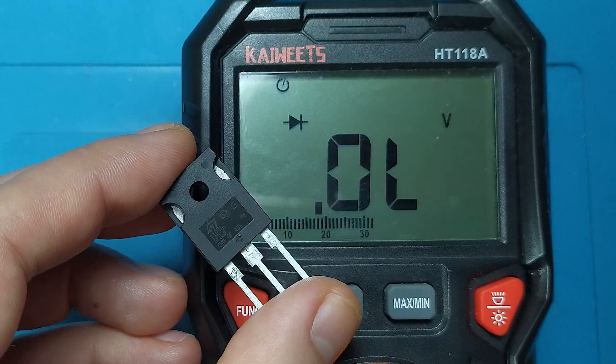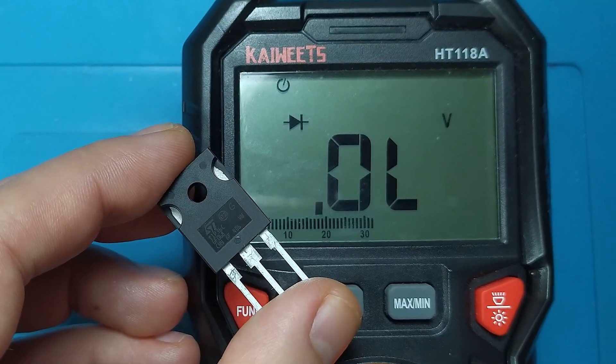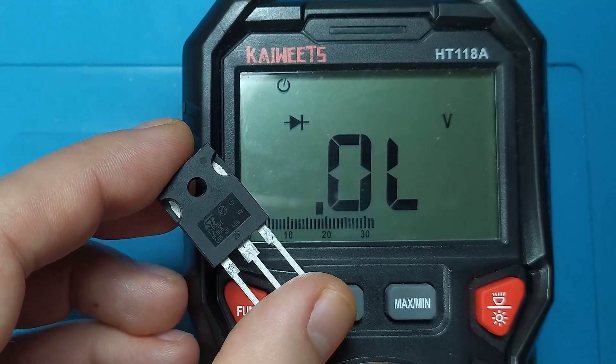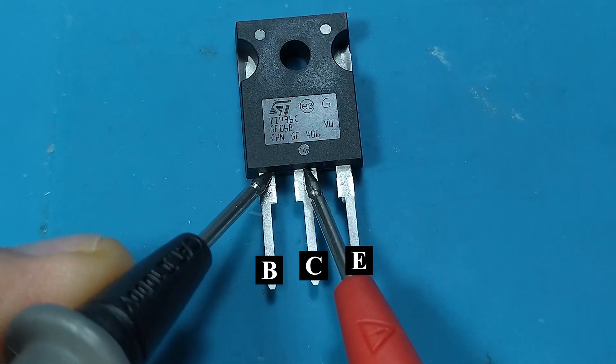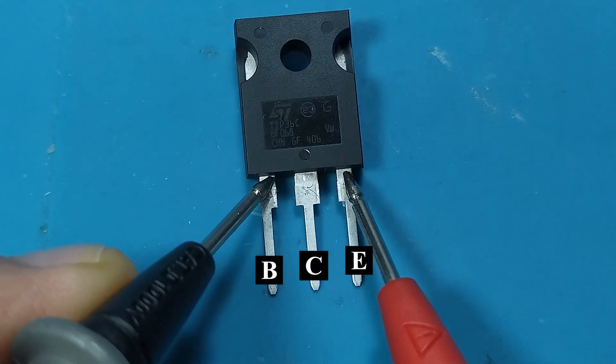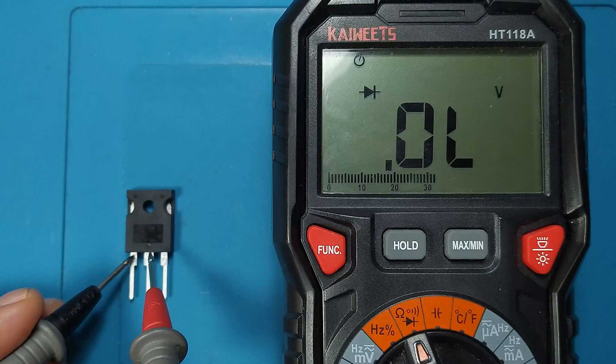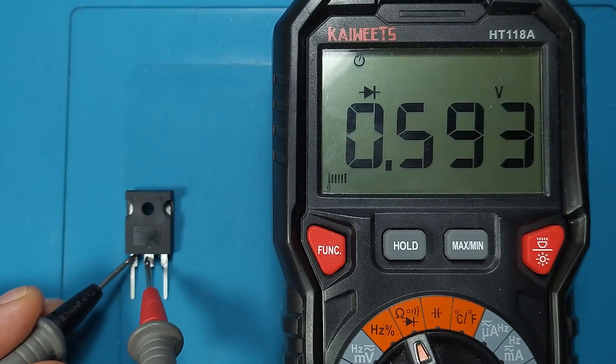Let's also test the TIP36C transistor. With the black probe on the base and the red probe on the emitter and collector, we should have a voltage drop of about 600 millivolts.